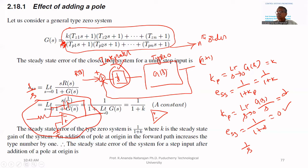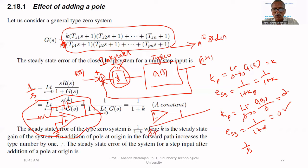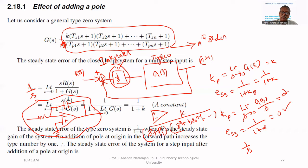If it is a type zero system and you add one pole at origin, steady state error is removed. But if you are adding a pole not at origin — say s plus p1 is added to the denominator — if that pole is on the right hand side (s minus p1), the system becomes unstable. If you add a left hand side pole only, there is no problem for stability.